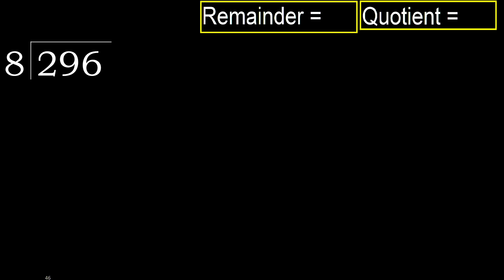296 divided by 8. 2 is less, therefore next. 29 is not less, therefore with 29.